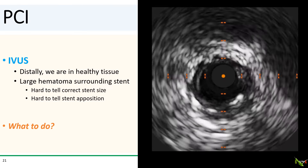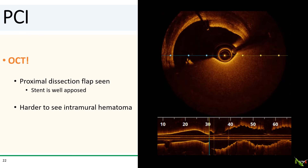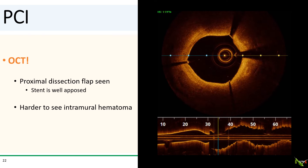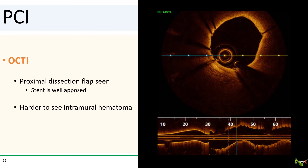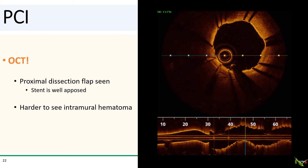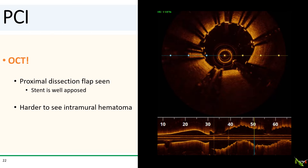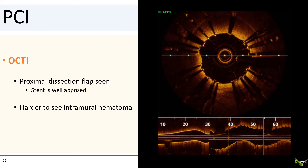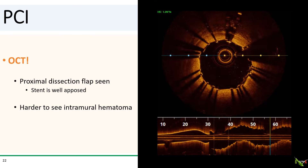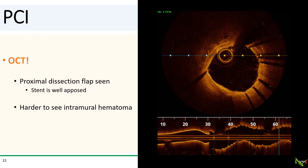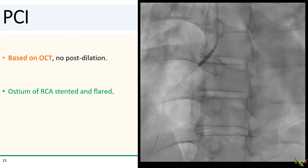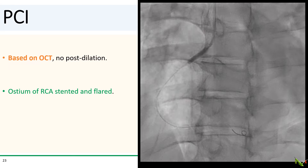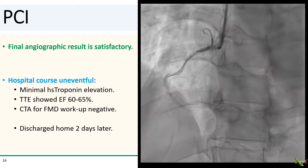I reached for the other intracoronary imaging modality: OCT. Here's the OCT run. There is, in fact, a proximal dissection flap — this could have happened with the guide, but I suspect it happened with the stent tearing the bulging intima as it was being deployed. Overall, the stent did appear to be well-sized and well-opposed. It's a little harder to see the intramural hematoma on OCT compared to IVUS — you can make it out, but it is more subtle. Based on the OCT images, I did not think I needed to post-dilate any further, but I did need to stent the proximal edge of the vessel.